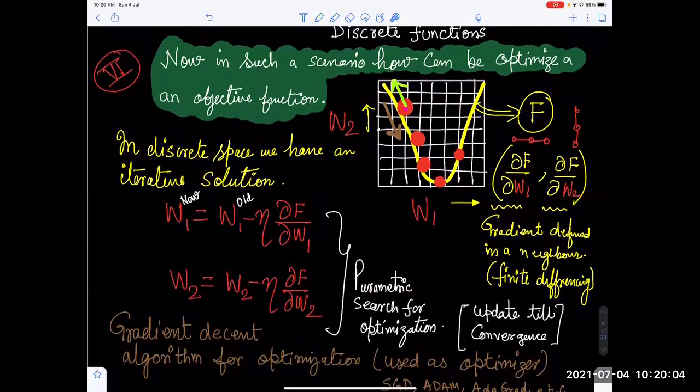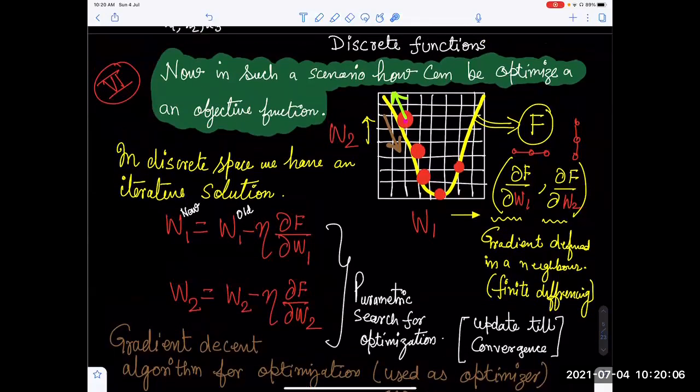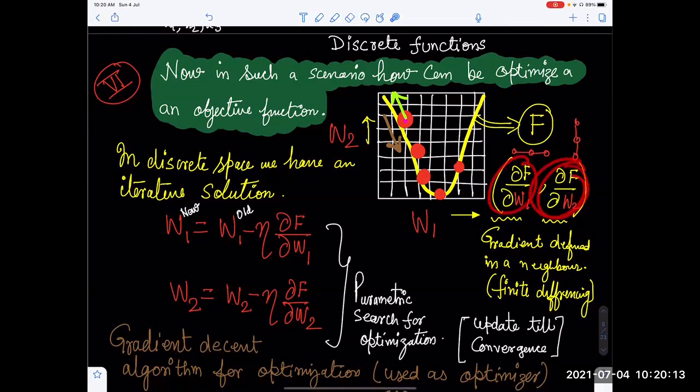So that is the thing that we are having one direction: df by w1, df by w2. What are these? These are actually the direction, partial things.